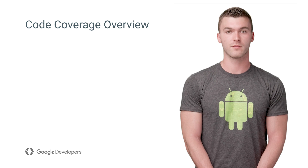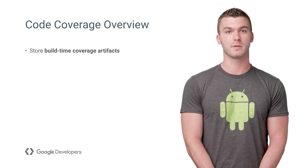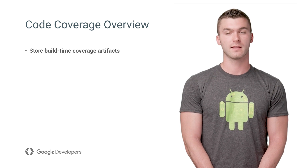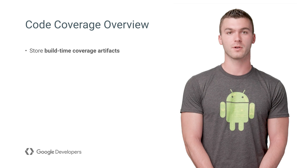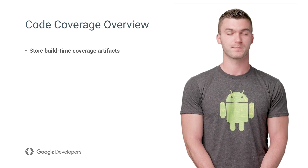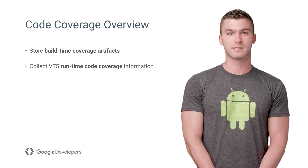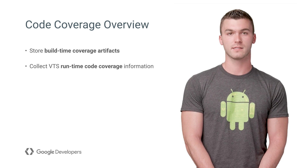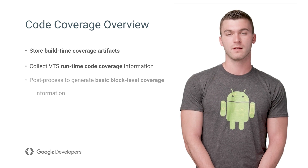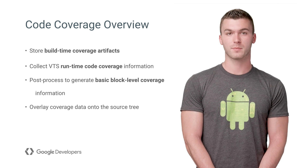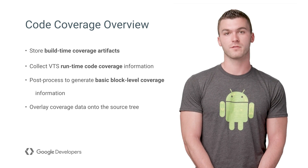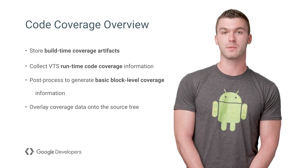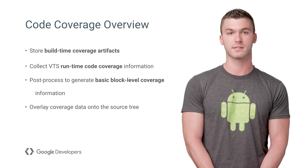Step one involves collection and storage of build time coverage artifacts. These will be needed later in order to interpret the data collected from the Android device at runtime. Next, tests will execute against the coverage instrumented device implementation and produce runtime coverage data. In steps three and four, basic block-level coverage information is generated so that it can be overlaid on the source tree in the final step.